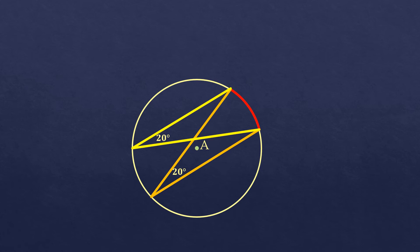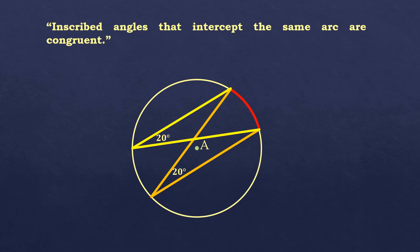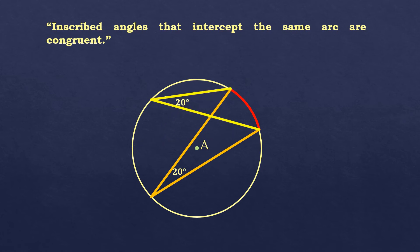Our basis is this theorem: inscribed angles that intercept the same arc are congruent. We've repositioned the vertex of the second inscribed angle, but as you can see it's still the same measure. Wherever you transfer this vertex, as long as it's intercepting the same arc, it's going to be the same measure.